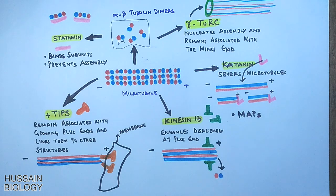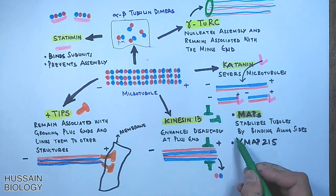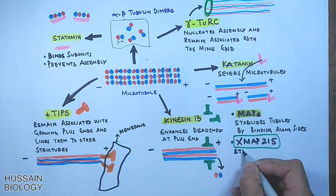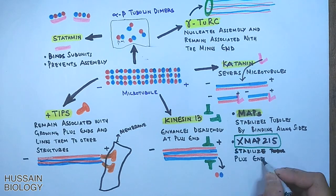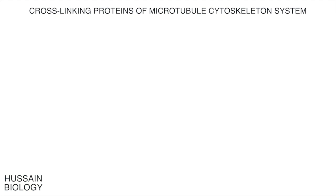Now let's look at some stabilizing proteins. MAPs — microtubule-associated proteins — stabilize the tubules by binding along their sides. Another stabilizing protein is XMAP215, which stabilizes the plus end of the microtubule.